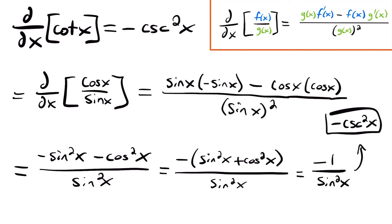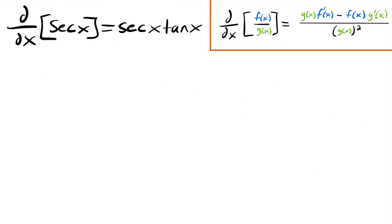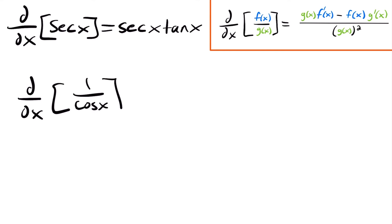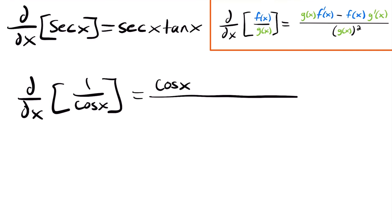Next, let's prove that the derivative of secant x is equal to secant x tangent x by using our quotient rule. We can redefine secant x to be the derivative of 1 over cosine x, because secant equals 1 over cosine. So now we have a quotient, 1 divided by cosine x, that we can use our quotient rule for. Our numerator function is 1 and our denominator function is cosine x. We'll have that this is equal to our denominator function, cosine x, multiplied by the derivative of the top function, which is going to be 0, because the derivative of 1, a constant, will be 0.